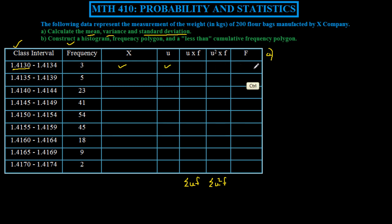I'm going to show a sample step of how to calculate these boxes. We'll start with this cell, X. X is the midpoint of the class interval. In this case, it's 1.4130 plus 1.4134 over 2, which equals 1.4132.